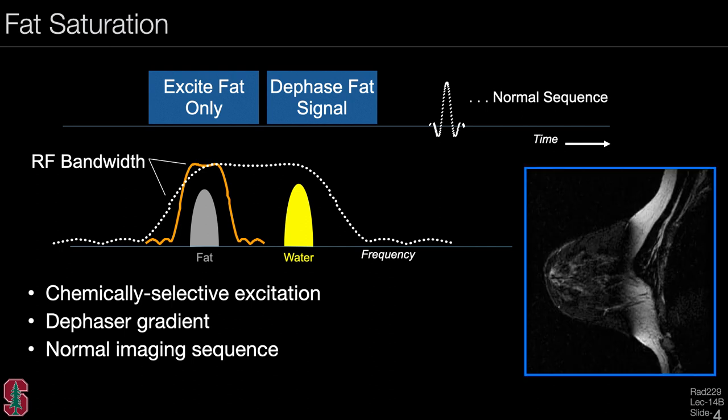These are the cases where fat suppression works, where we accidentally fail to suppress fat, and where we accidentally suppress water. These unwanted effects are typically because of background static magnetic field inhomogeneities.